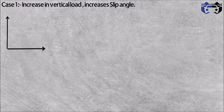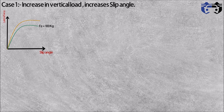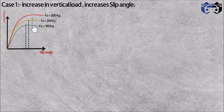Case 1: increase in vertical load increases the slip angle. On this tire load performance curve between slip angle and lateral force, as the load increases, higher slip angles are required to achieve the maximum lateral force, shifting the peak towards increasing slip angle. The maximum slip angle alpha-3 is reached at the maximum load of 300 kg. When the car is turning, the load on the outer tire increases, so it will increase the slip angle of the outer tire.